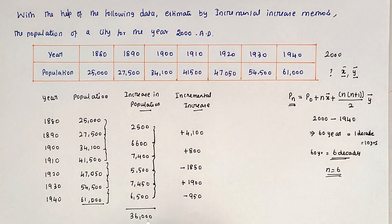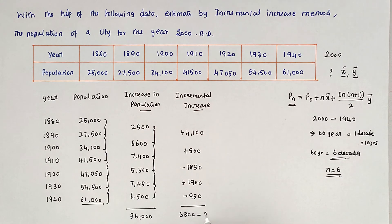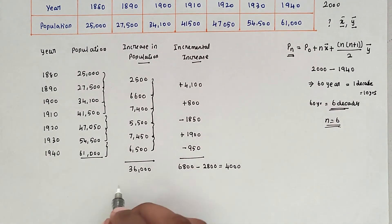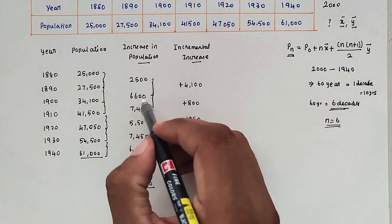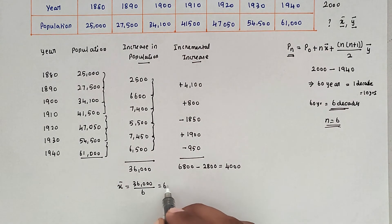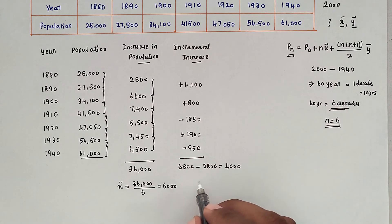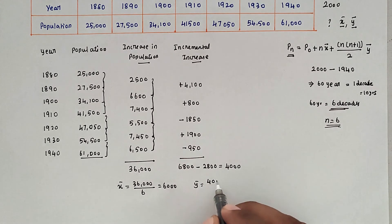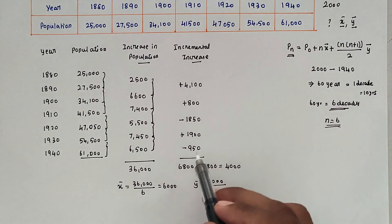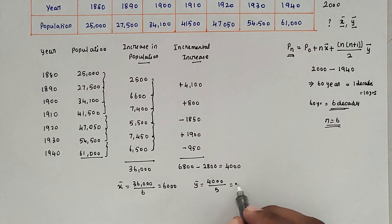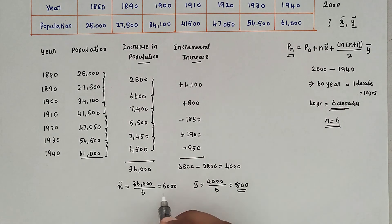Adding all the population increases: 2,500 + 6,600 + 7,400 + 5,550 + 7,450 + 6,500 = 36,000. So x̄ = 36,000 ÷ 6 = 6,000. For ȳ, the sum of incremental increases gives 4,000 (positive sum 6,800 minus negative sum 2,800), and ȳ = 4,000 ÷ 5 = 800.